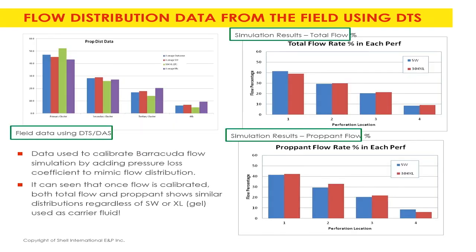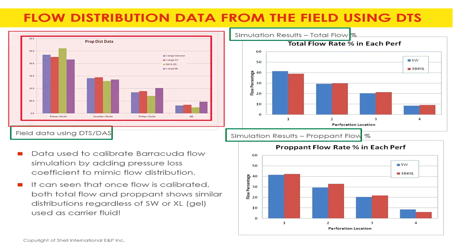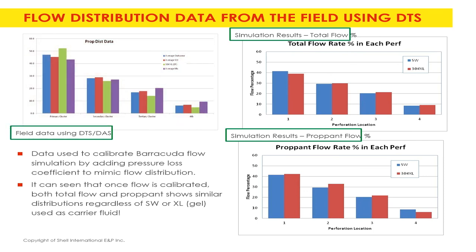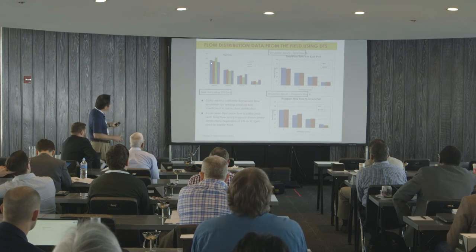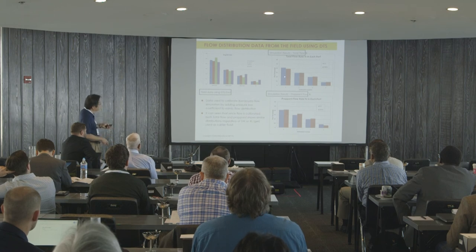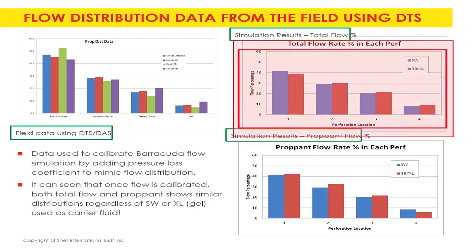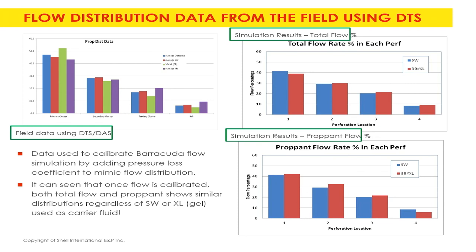These are the measurement data - the purple line is the experimental data, and the blue line is the model, averaged over the data. Once you do that, you can actually predict what kind of proppant distribution you will get in each hole. In one case study, we looked at whether putting polymers in changes the proppant distribution - it turns out they are almost identical, which eliminates one of the uncertainties.